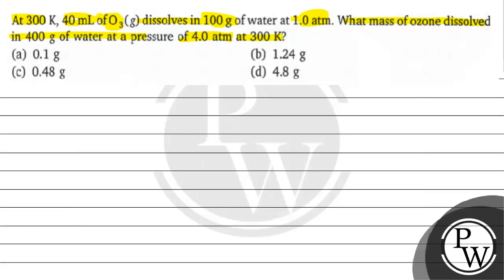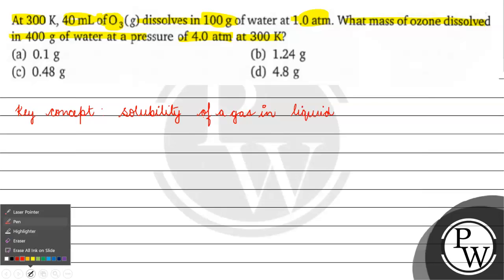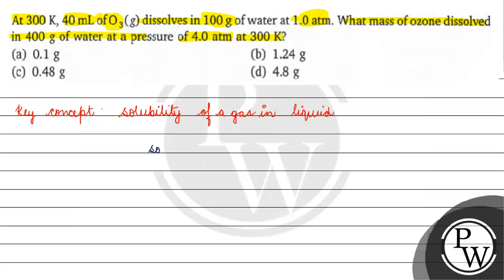The key concept for this question is solubility of a gas in liquid. Solubility of a gas is directly proportional to the partial pressure of the gas. If partial pressure of the gas is more, then solubility is more; if partial pressure comes down, solubility comes down.